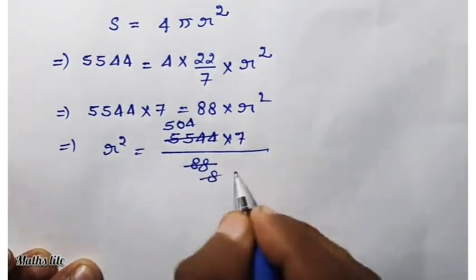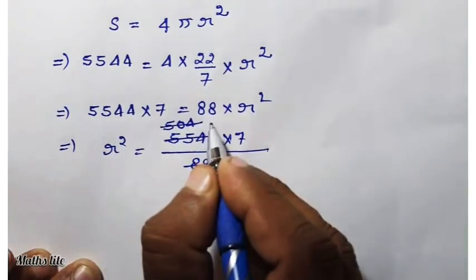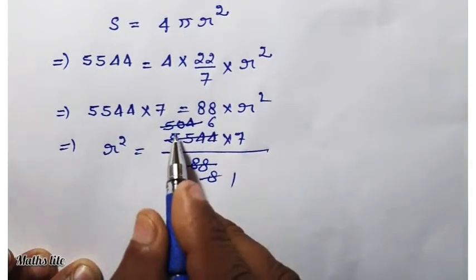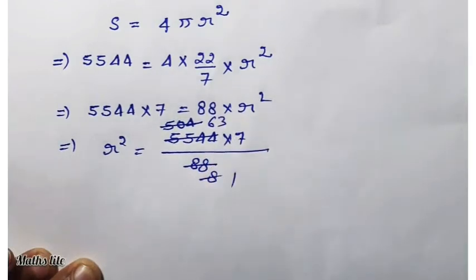Cancel with 8. 8 times 8, 8 times 6 is 48 remainder 2, carry 4 is 24, 8 times 3 is 24.